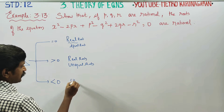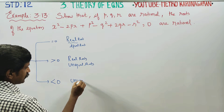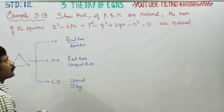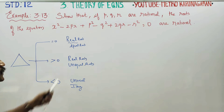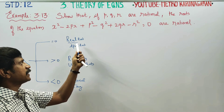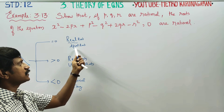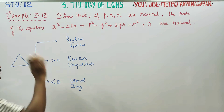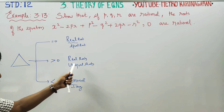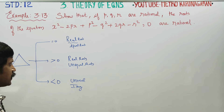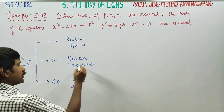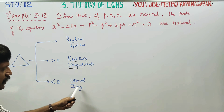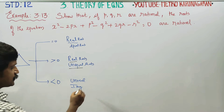If discriminant is less than 0, we get unreal or imaginary roots. So there are three types of results: equal roots when Δ=0, unequal real roots when Δ>0, and unreal imaginary roots when Δ<0.